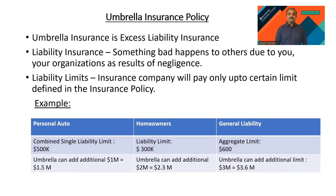If you take your policy — whether homeowners, personal auto, or general liability — there will be liability limits. It will say something like 500k or 300k, which means that is the total limit the insurance company is going to pay in case you cause injury to others due to your negligence.